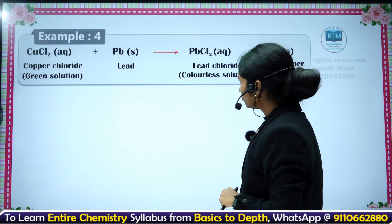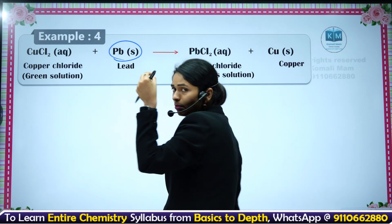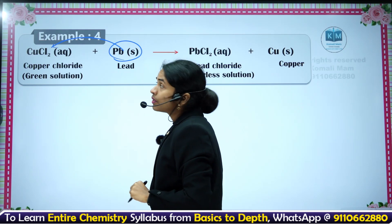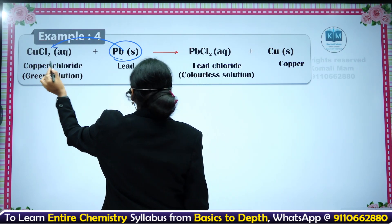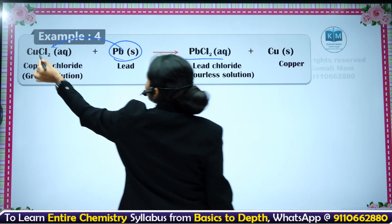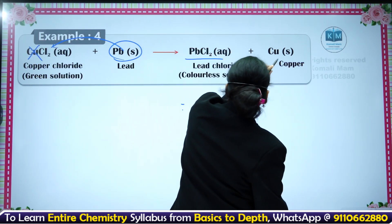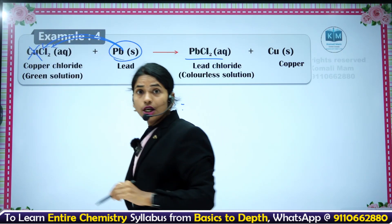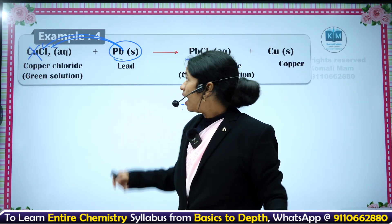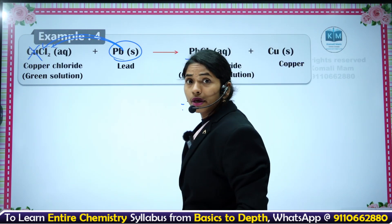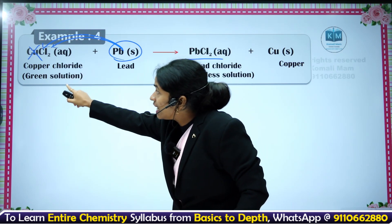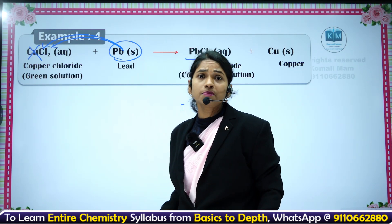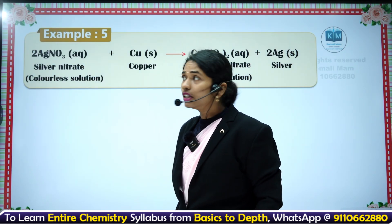Take a lead metal strip and put it in copper chloride solution. Once placed in copper chloride solution, we get lead chloride (PbCl2) and copper metal comes out. Lead is more reactive than copper, that is why it displaces copper. The greenish solution slowly fades into a colorless solution. This is one of the displacement reactions.